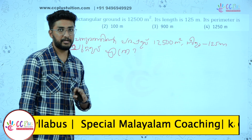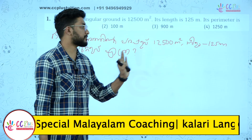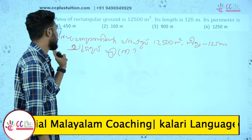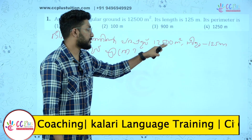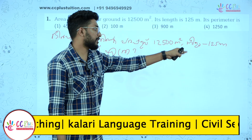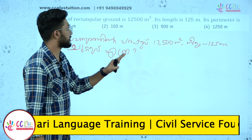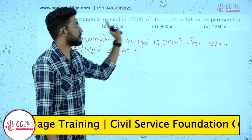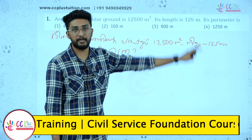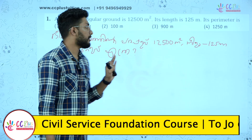Middle students will say the answer is 12,000 meters. But we need to find the perimeter. The equation relates the area, length, and perimeter.